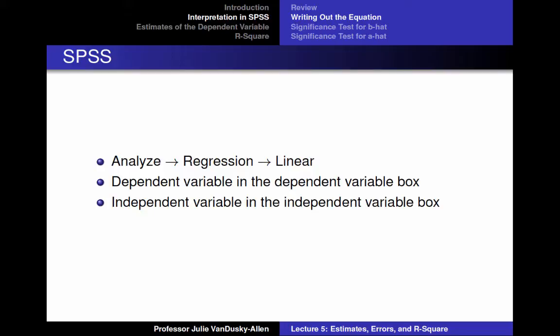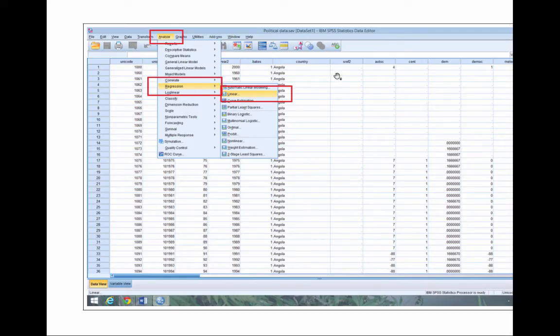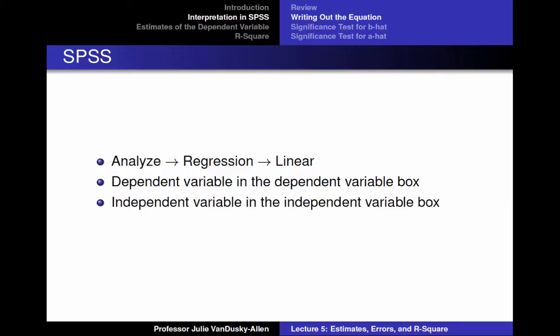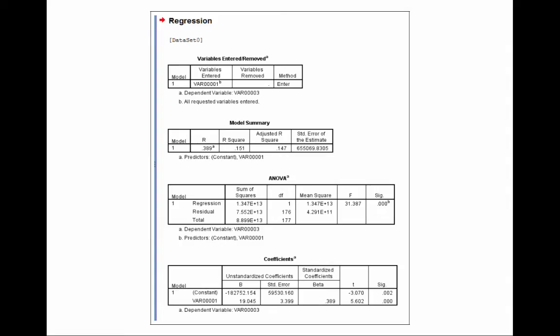This slide tells you the steps you need to go through to run a regression. Let's say my independent variable is GDP per capita and my dependent variable is net migration — I expect GDP per capita to have a positive impact on net migration. To run a regression analysis in SPSS, you click on Analyze, Regression, Linear. You will put the dependent variable in the dependent box, then click OK. After you run the regression, this is what your results should look like. The first step in interpreting the results is writing your regression equation.